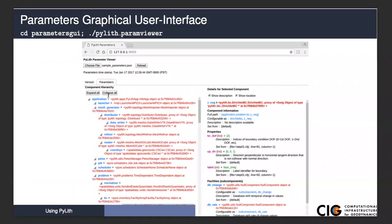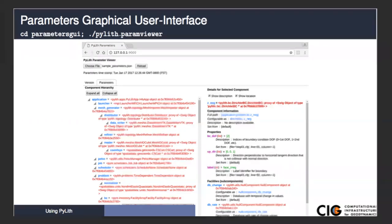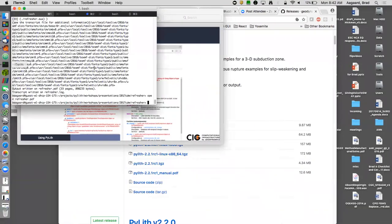Within PyLith version 2.2 and later, we have included a graphical parameter viewer that you can run directly on your machine. It's in the parameters GUI directory, and you simply start up the parameter viewer. It'll give you a URL to plug into your browser. You plug it into your browser, and that'll start the page. Then you load in the parameters. Let me give you a very quick demo of that.